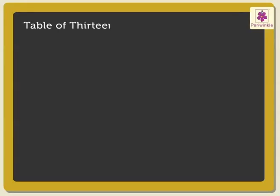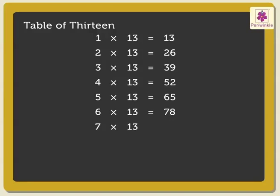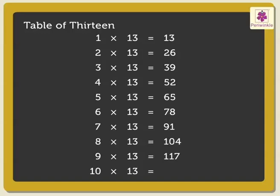The table of 13: 1×13 is 13, 2×13s are 26, 3×13s are 39, 4×13s are 52, 5×13s are 65, 6×13s are 78, 7×13s are 91, 8×13s are 104, 9×13s are 117, 10×13s are 130.